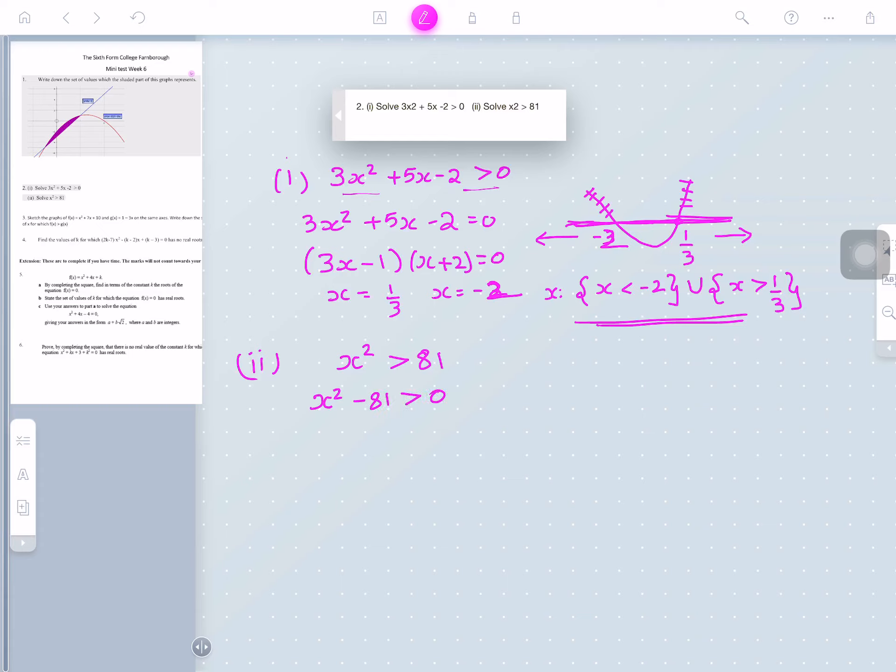To work out the critical values, or x-intercepts, x squared minus 81 equals 0. So which will give you x equals plus or minus 9.